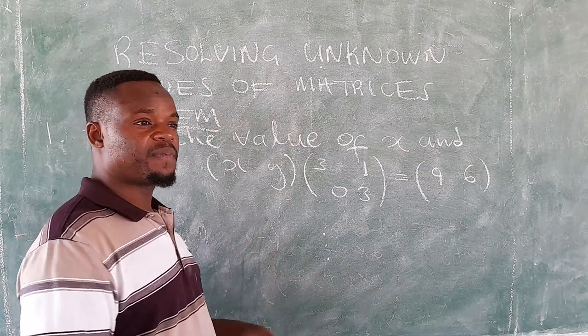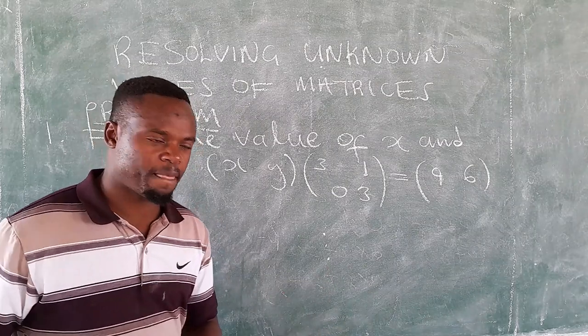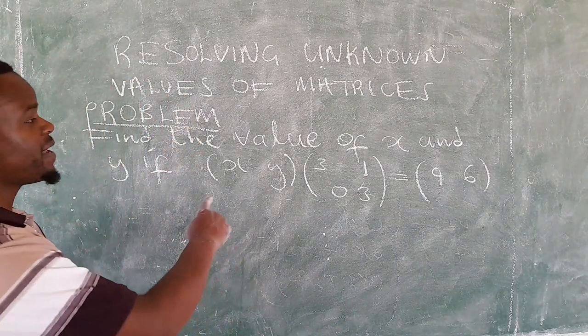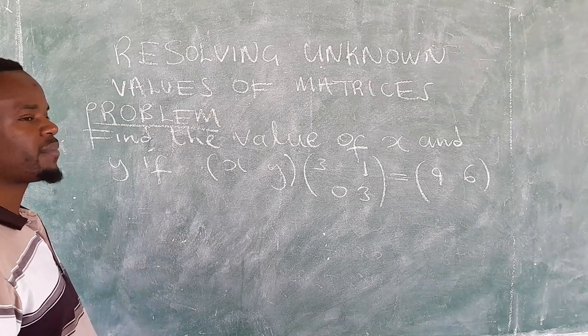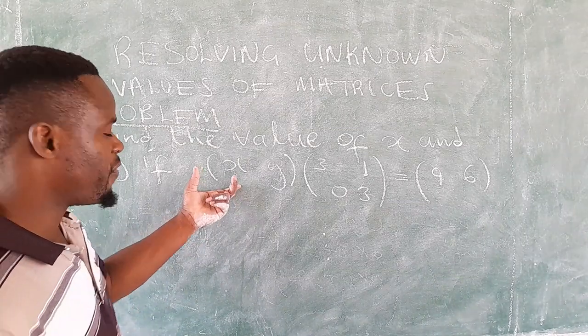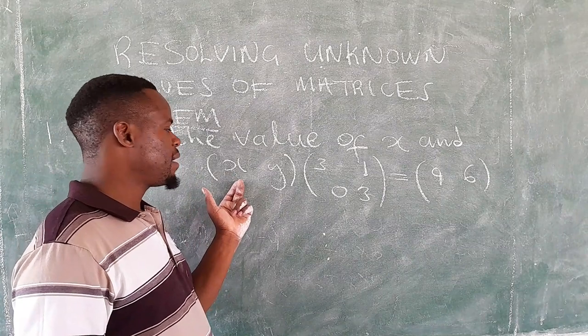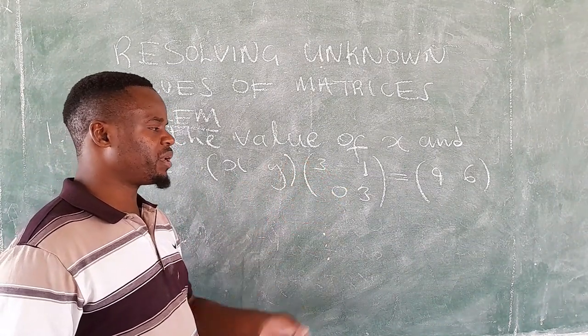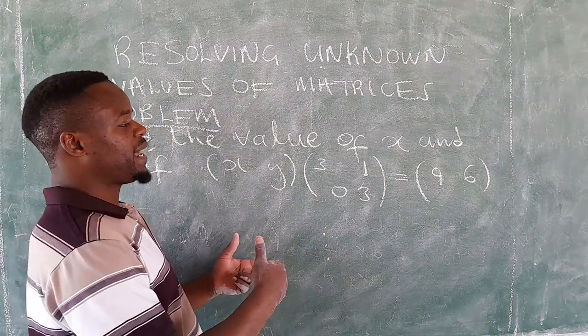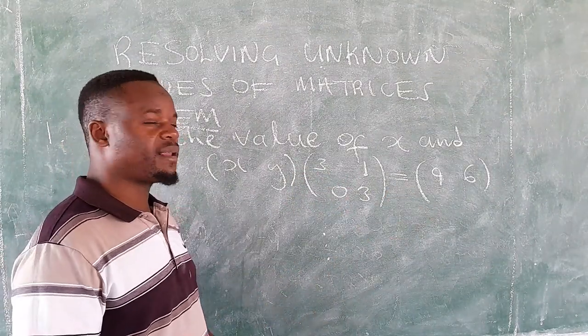They say find the value of x and y if the first matrix [x, y] and the second matrix [[3, 1], [0, 3]] when they are multiplied they give us [9, 6].